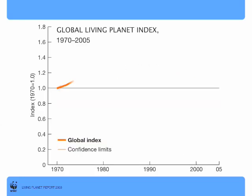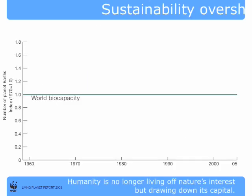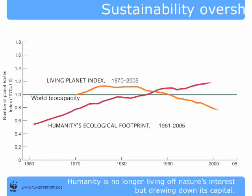The Worldwide Fund for Nature have been measuring the populations of over 1,600 vertebrate species across the world, and in just 35 years populations have declined by nearly 30%.